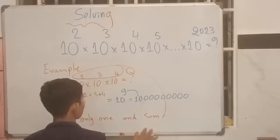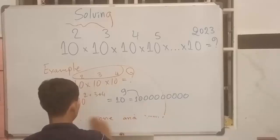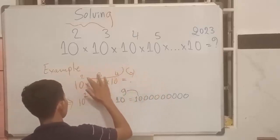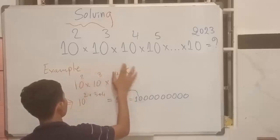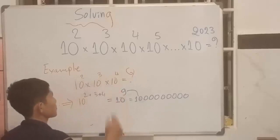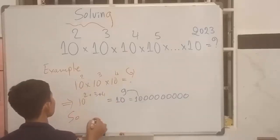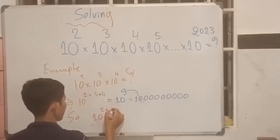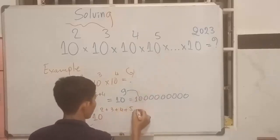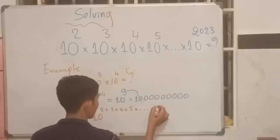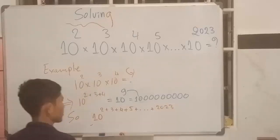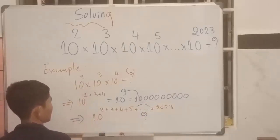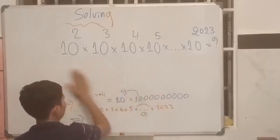This is the answer of the inside data, it's important for you. We start 10 to the power 2, so 10 plus 2 plus 3 plus 4 plus 5 plus dot dot dot and then 2023. So you can find here what, this is the trick to solve this exercise.